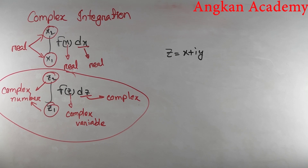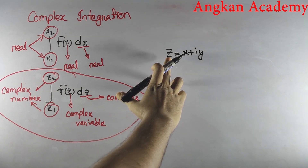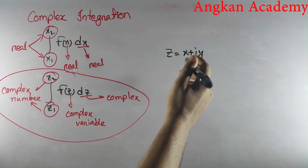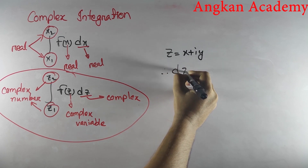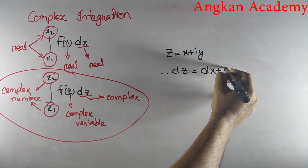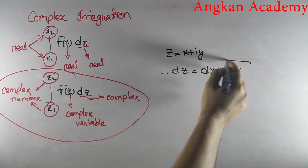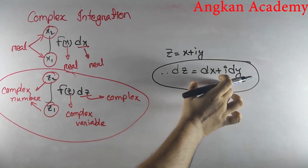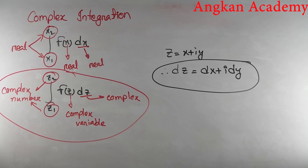With the help of the equation of that line, circle, or curve, we will be able to convert x into y and y into x. Also, since z = x + iy, we can write dz = dx + i dy. These are the basic concepts we need to solve complex integration problems.